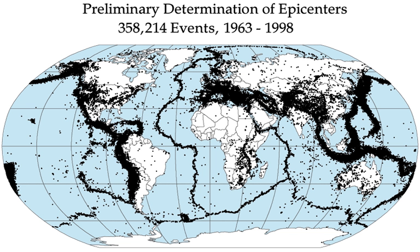Earthquake swarms are sequences of earthquakes striking in a specific area within a short period of time. They differ from aftershock sequences in that no single earthquake in the sequence is obviously the main shock, and none have notably higher magnitudes than the others. An example is the 2004 activity at Yellowstone National Park. In August 2012, a swarm of earthquakes shook Southern California's Imperial Valley, showing the most recorded activity in the area since the 1970s.